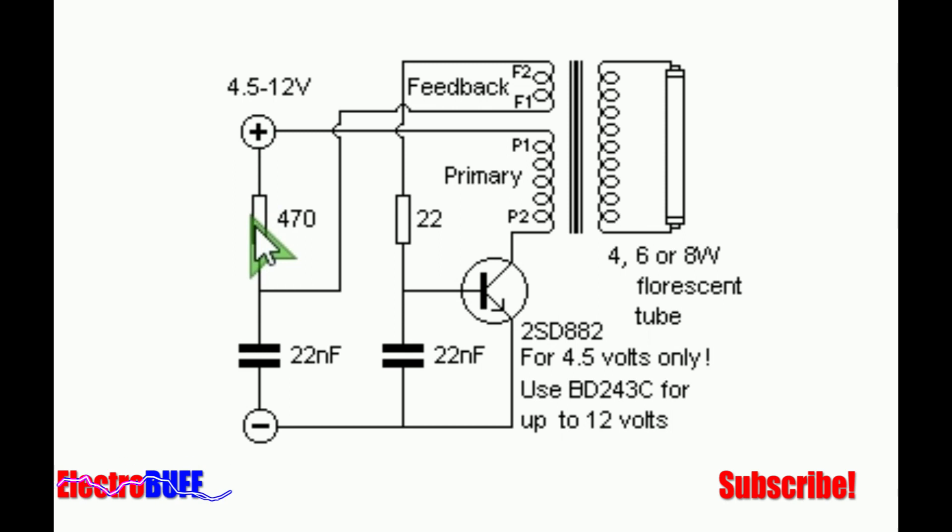Through the 470 ohm resistor, through the feedback winding pin F1 to pin F2, through the 22 ohm resistor and to the base of the transistor. The transistor will begin conducting and this will allow current to flow through the primary winding.